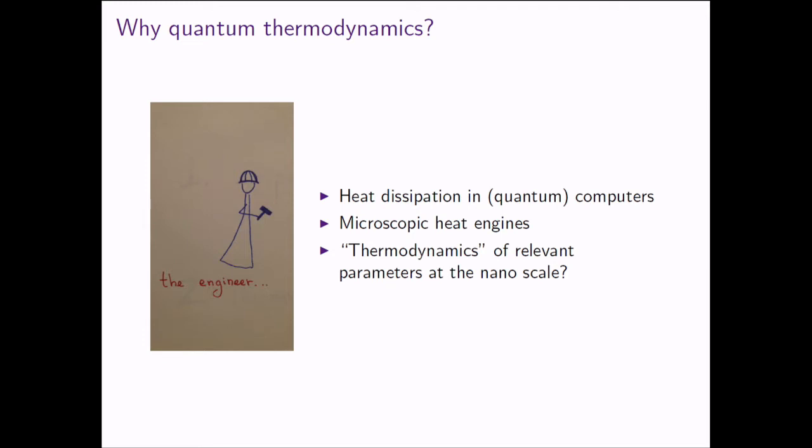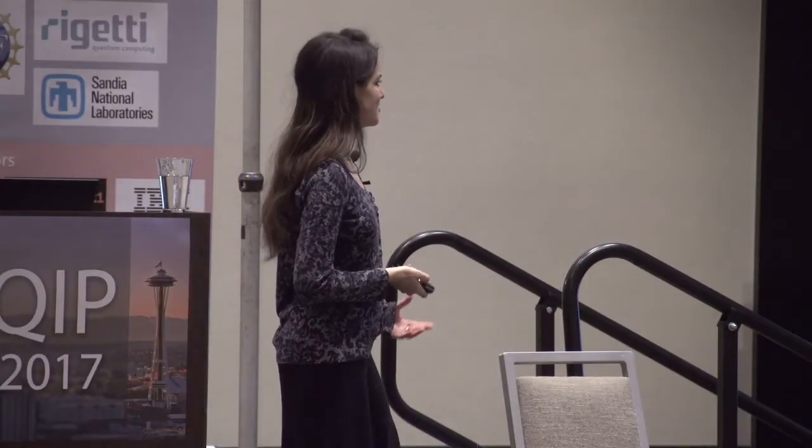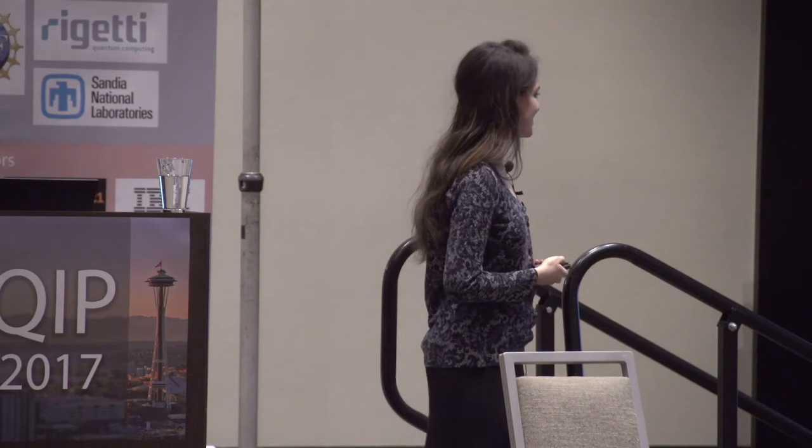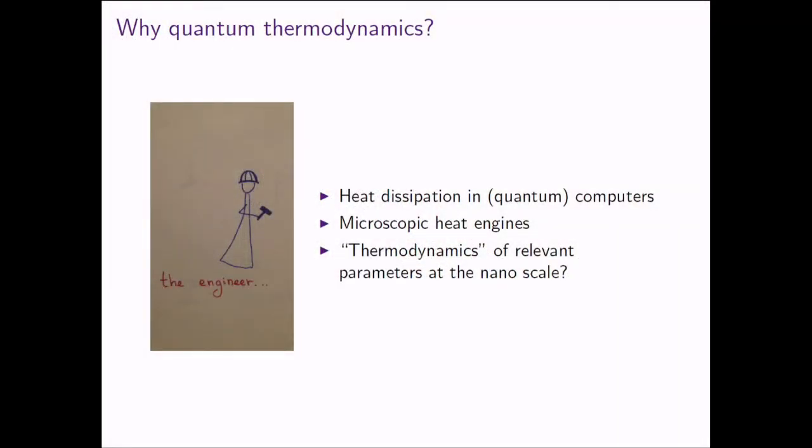All of these people start from thermodynamics and want to explore it in new regimes. On the other hand, you have the engineer — someone interested in actually developing a machine and making it efficient. These are the kind of people who developed the first thermodynamics theory. You might ask: what's the heat dissipation in quantum computers? How can we keep it low? How small can we make heat engines? Maybe work and heat are not the most relevant quantities — what should we be looking at?